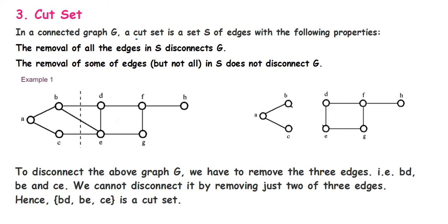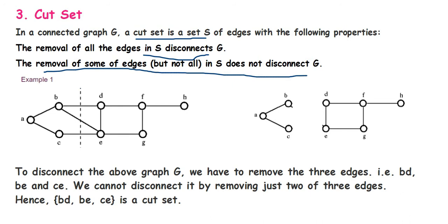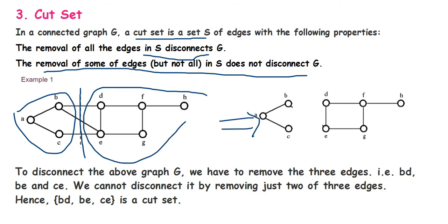Next is the cut set. In a connected graph G, a cut set is a set S of edges with the following properties: the removal of all edges in S disconnects G, and the removal of some but not all edges in S does not disconnect G. A cut set means cutting a certain set of edges in such a way that it produces a disconnected graph. Here, edges B–D and C–E are disconnected, resulting in separate sets — A–B–C as one set and D–F–G–H as another.